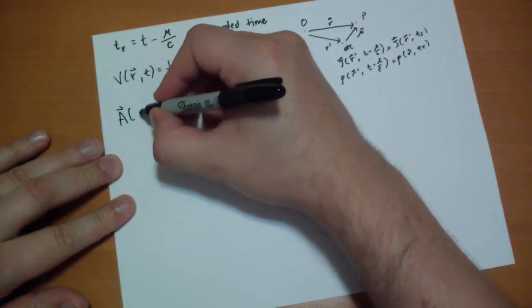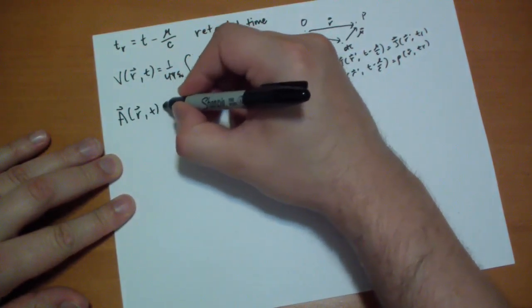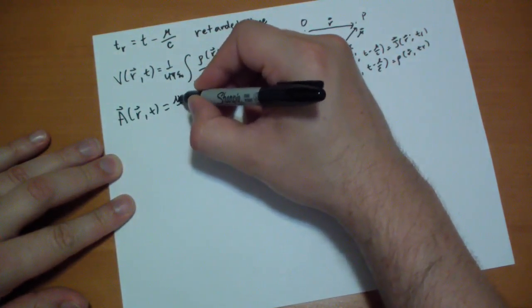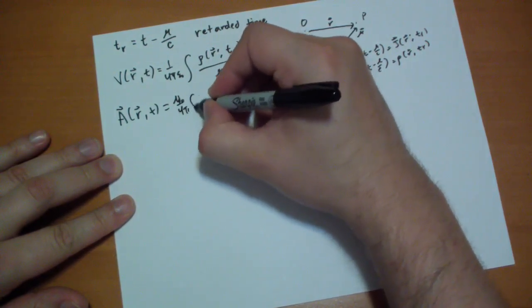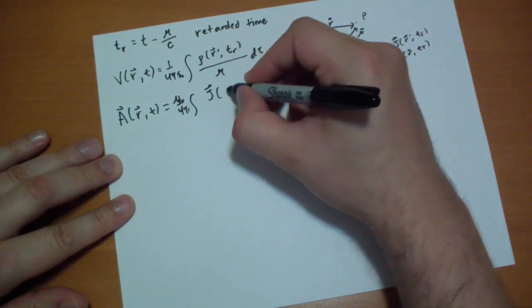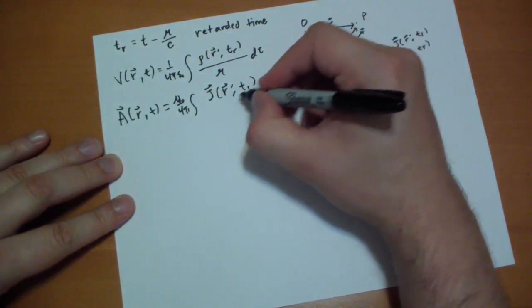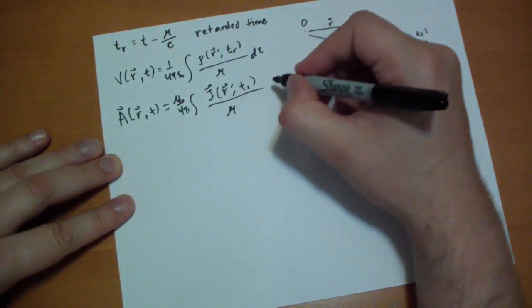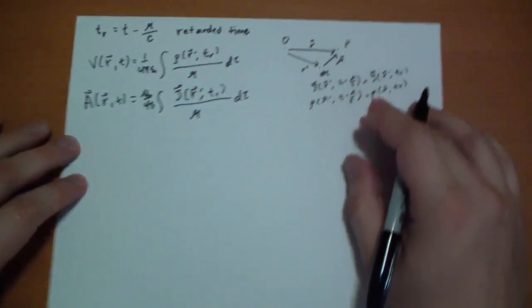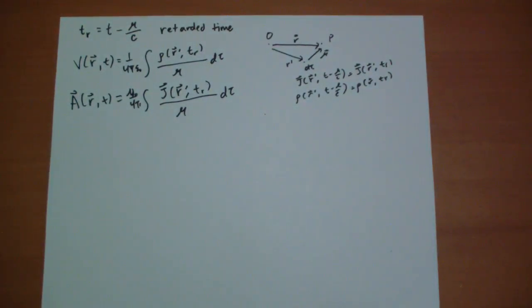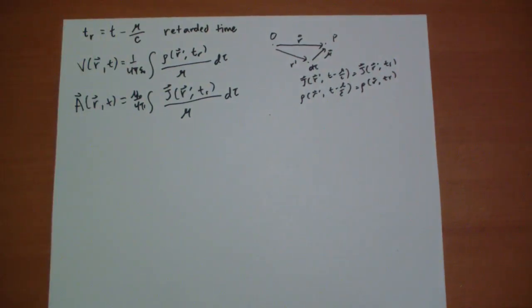And same thing for our A potential, mu naught over 4 pi, integral of j vector, the position we're evaluating, at the time that it used to be, d tau. Those are the two potentials that we're going to be using. Put these in a box and take them home. These are the important equations for this entire chapter.